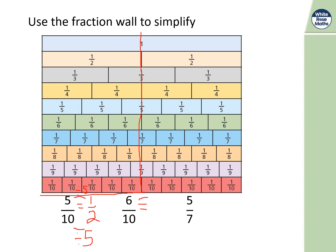Six tenths — they're both even, so I can divide top and bottom by two. Six divided by two is three, ten divided by two is five, so the answer is three fifths. Checking on the diagram: six tenths — drawing a line across — it crosses at one fifth, plus one fifth, plus one fifth, which equals three fifths. That confirms the answer.